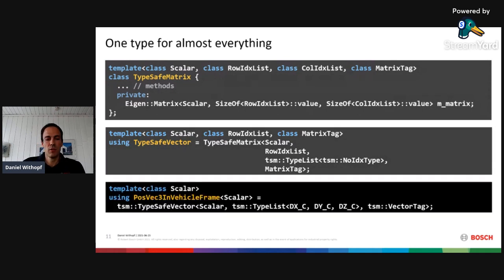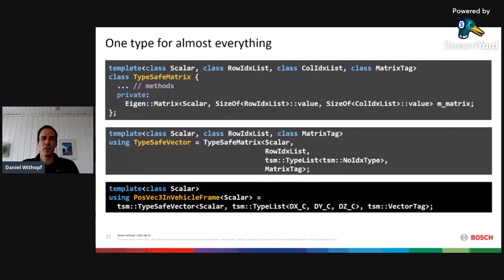We can use this to define our first concrete vector: a position vector of dimension three in vehicle frame. We use the TypeSafeVector alias instantiated with a given scalar type. The type list here consists of dx, dy, dz — so x, y, and z position in vehicle frame. The tag at the end is a vector tag, which describes a point in the mathematical sense. My library distinguishes between points and displacement vectors — the displacement vector would get a delta vector tag.